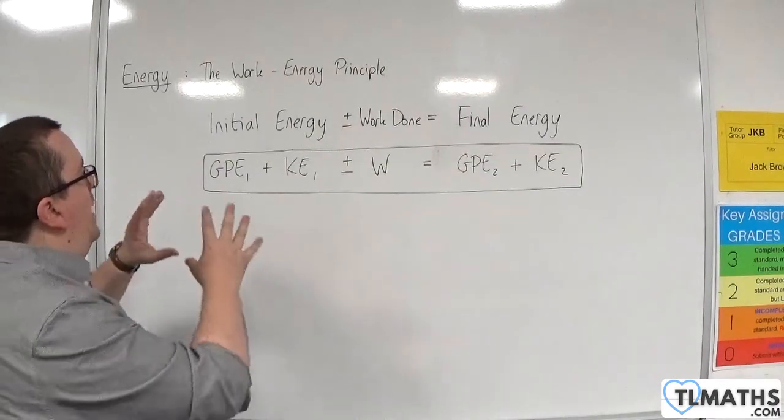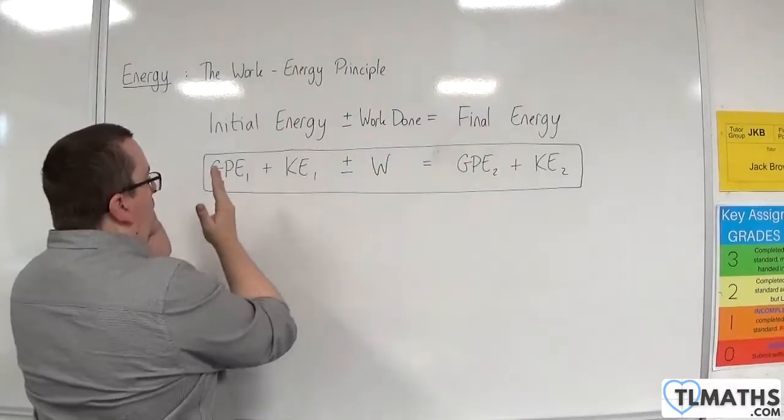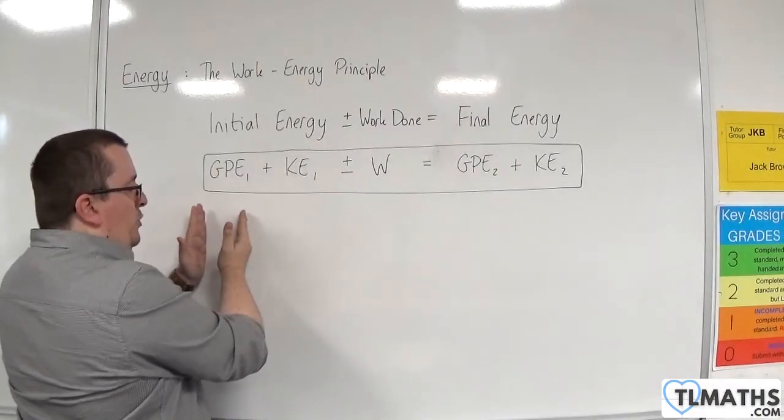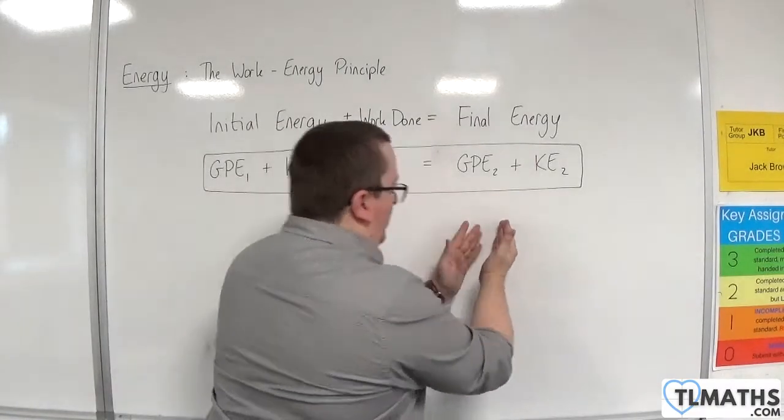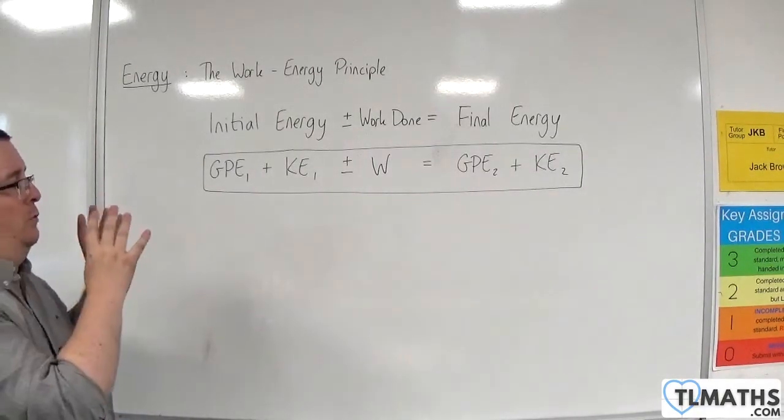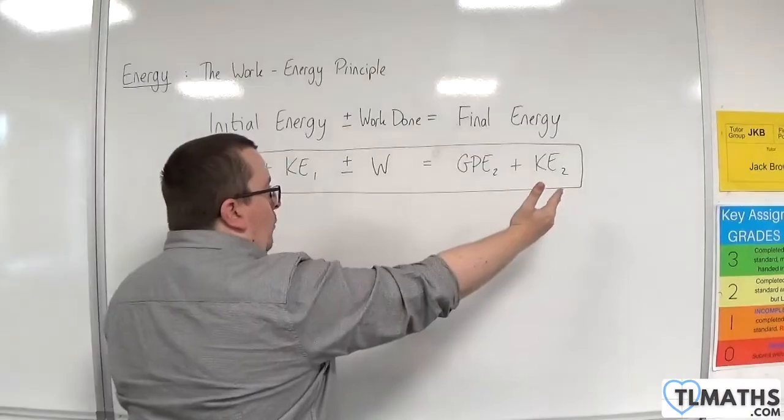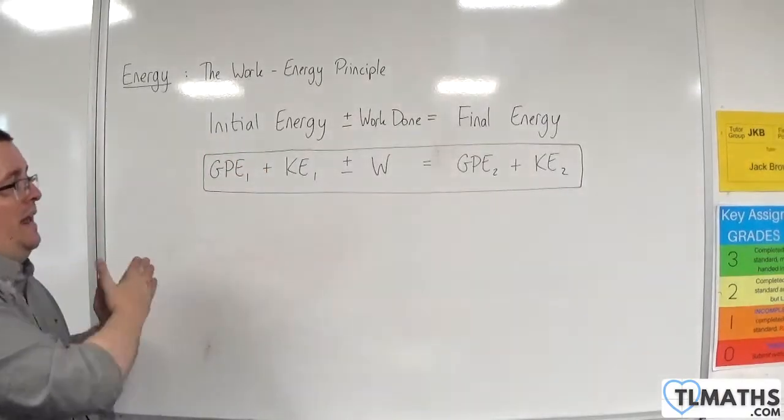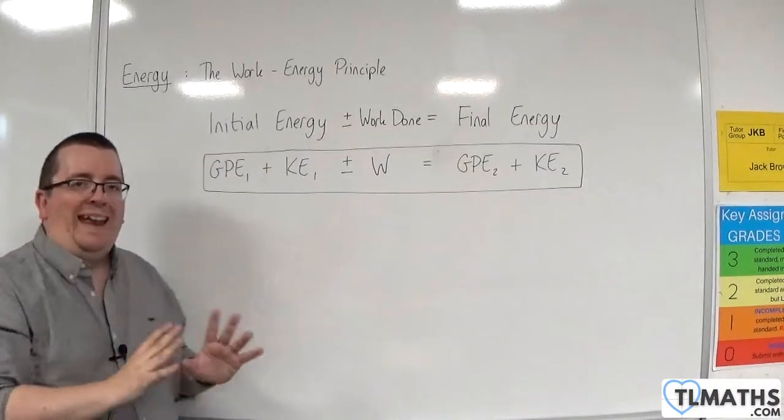So you know that, okay, I've got it. What's the initial gravitational potential energy? What is the final gravitational potential energy? I need to take those into account. So if you lay it out that way, then it makes sure that you don't miss anything out.